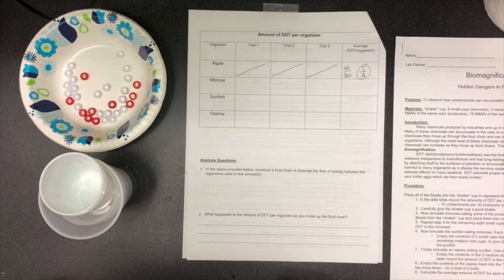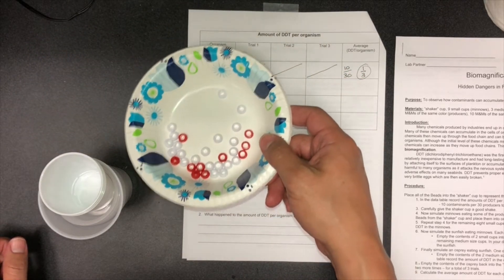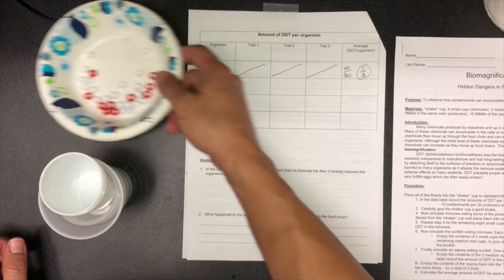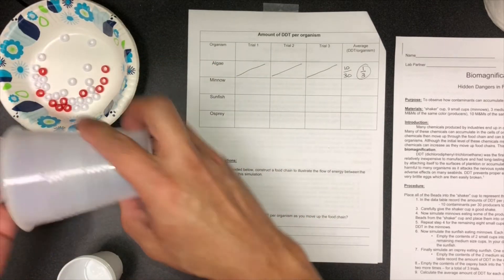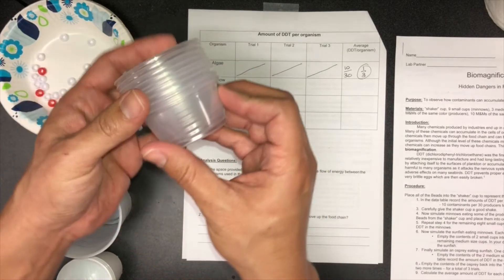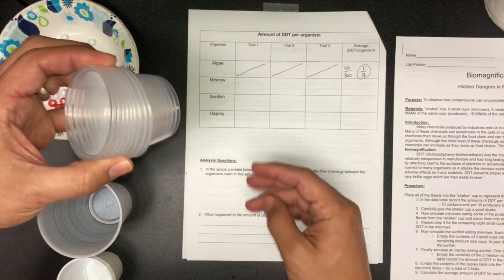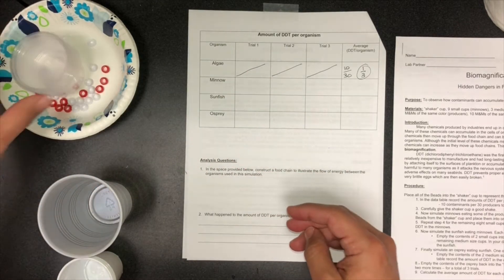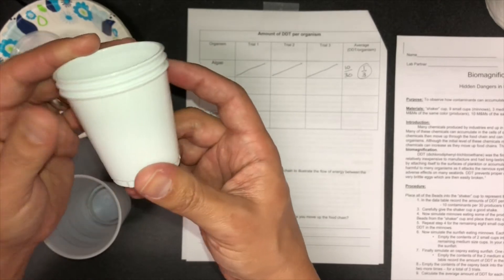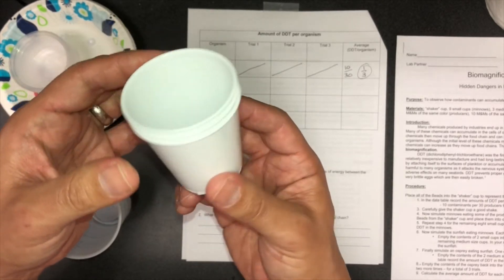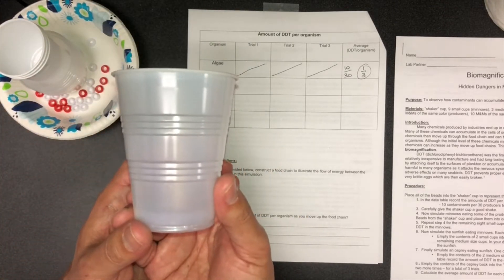So talking about materials, it says shaker cup so we're going to use a bowl. As you can see, they're all filled with beads already. Nine small cups—these guys right here—represent the minnows, those small little fish that live in ponds and streams. Three medium cups represent sunfish, and sunfish are predators of the minnows. Then one large cup, which is the major predator for this lab, the osprey.